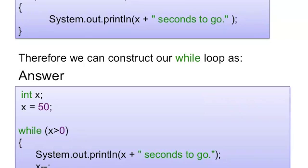we see that we are going to initialize x to 50 and then in the while loop, we are going to state x is greater than 0 and then our statement, the system.out.println x plus seconds to go.